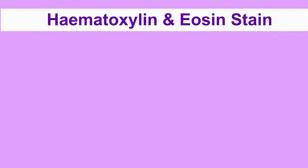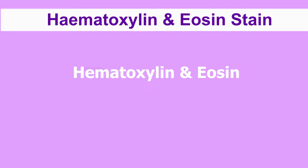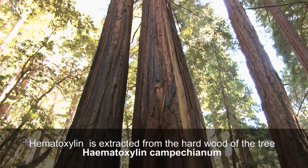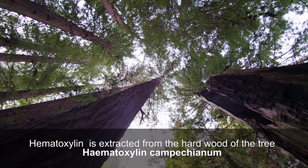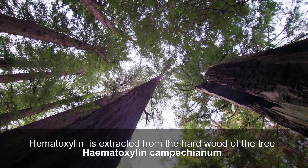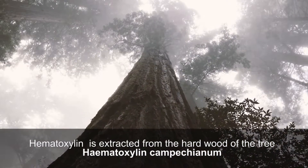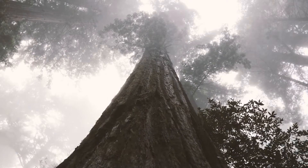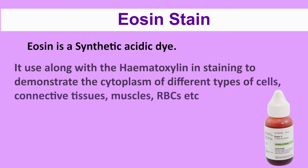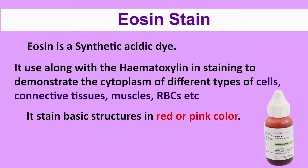As the name implies, this stain is a combination of two types of dyes: hematoxylin and eosin. Hematoxylin is extracted from the hardwood of the tree Hematoxylem campeachianum, found in Mexico and Central America. This tree is also called logwood or bloodwood. Eosin is a synthetic acidic dye used along with hematoxylin in staining.